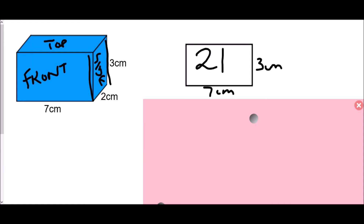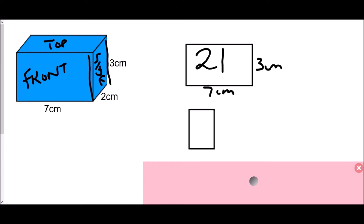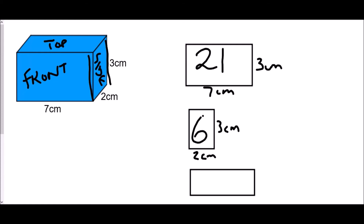For the side, draw a small picture: the bottom is 2 cm and the height is 3 cm, giving 2 × 3 = 6 cm². For the top, checking the dimensions: the length is 7 cm, matching the front, and the width is 2 cm, matching the side. So the top is 7 × 2 = 14 cm².